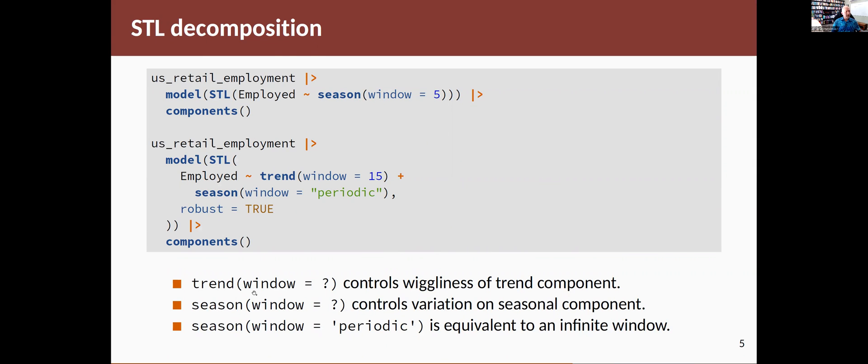the window argument in the trend part of this controls the wiggliness of the trend component. And because it's using Loess, it's doing weighted least squares fits. So it's looking at windows and fitting straight lines to them.